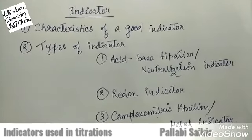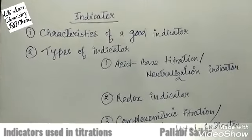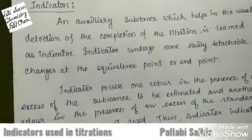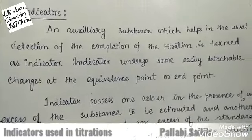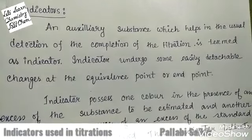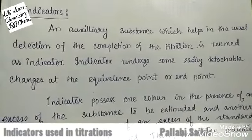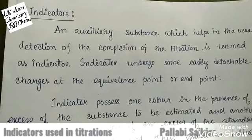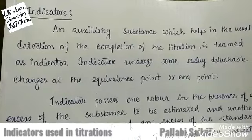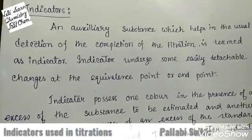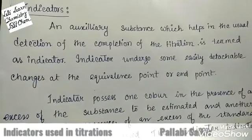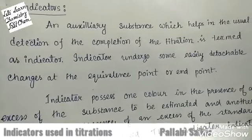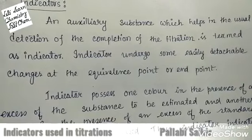First, let's start with what is an indicator and what are the characteristics of a good indicator. An indicator means any substance which indicates something in a titration. An indicator undergoes some detectable changes at the equivalence point or at the end point, and hence it indicates the completion of the titration.